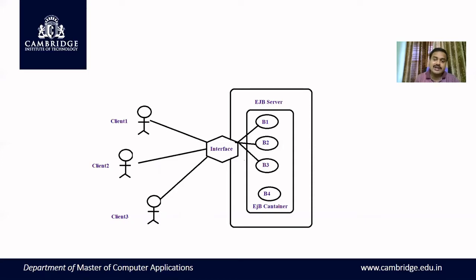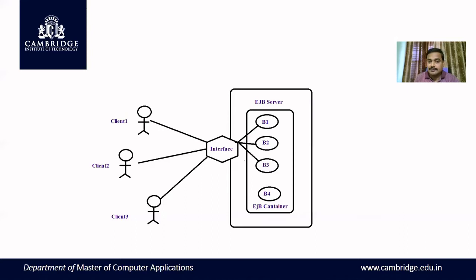The client cannot directly access those beans. If a client wants to access the bean, it has to be accessed through the interface provided by the server. When a client requests bean one, that bean one instance will be served to the client. After the service is over and the client again requests bean one, the same bean will not be allotted — a different instance may be allocated.